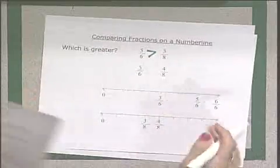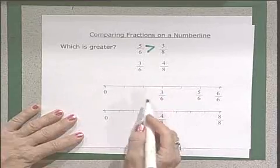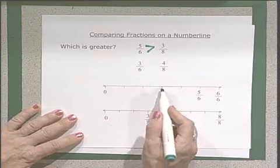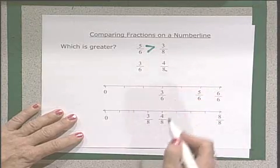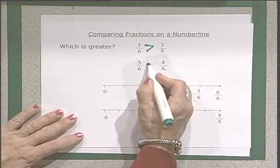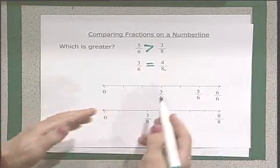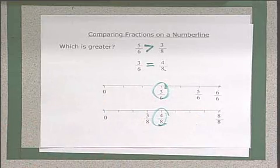And we can do the same thing if we have three sixths and four eighths. Four eighths is also in the middle. So what symbol would I put here? Equals. So look how easy it is to compare fractions when you have fractions on a number line.